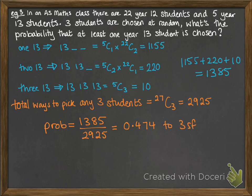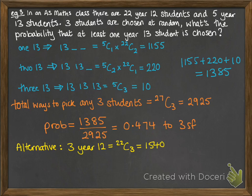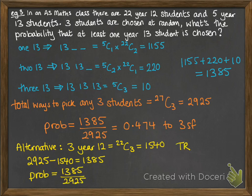However, there is a faster alternative route. Instead, think about picking three Year 12 students — no Year 13s — which is 22 choose 3. Subtract that from the total ways to pick any three students, and you get how many selections include at least one Year 13, which you can use directly for the probability. This is quicker, so you should always think about the question before launching in and see if there's a faster route to your answer.